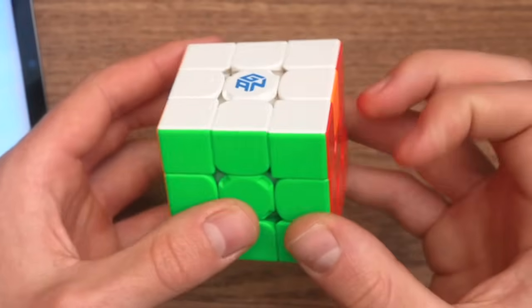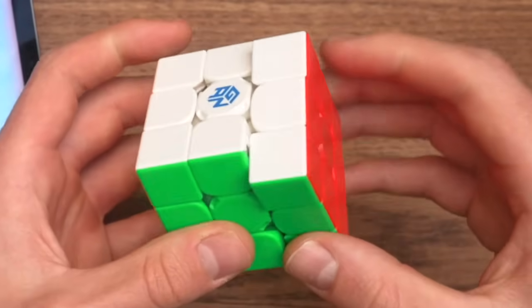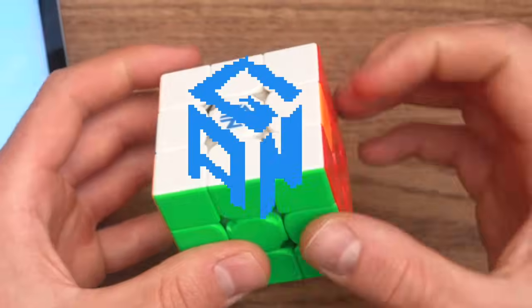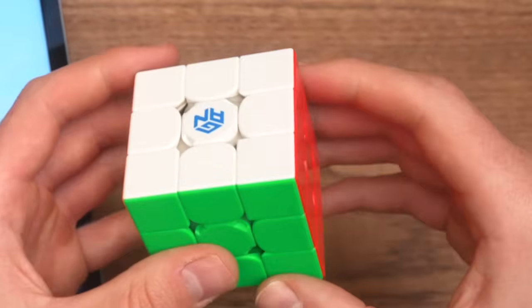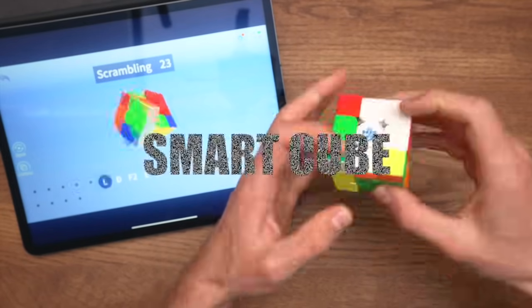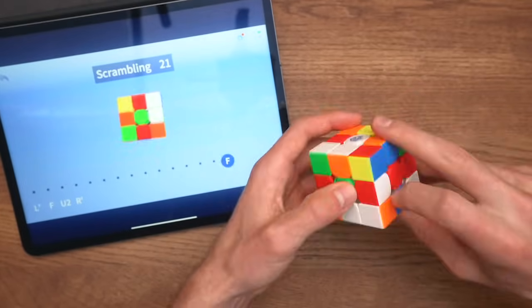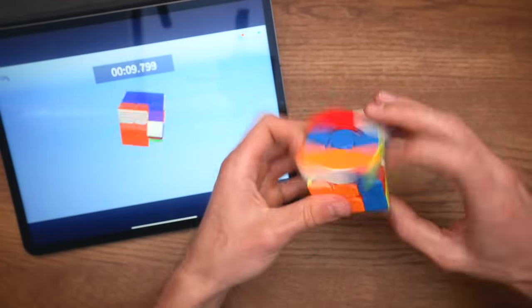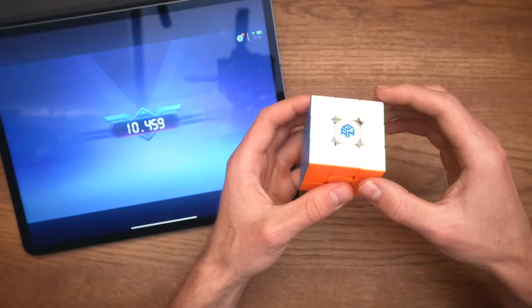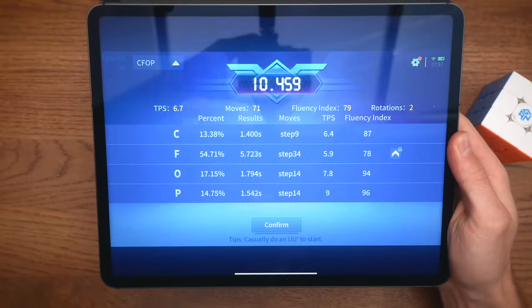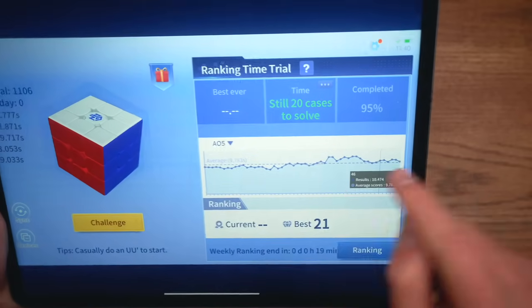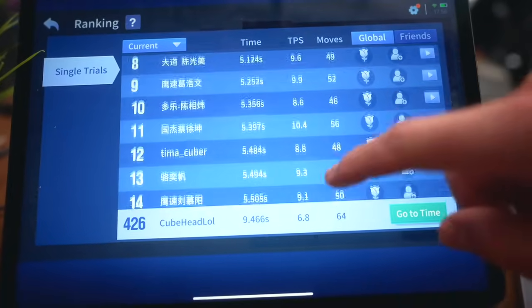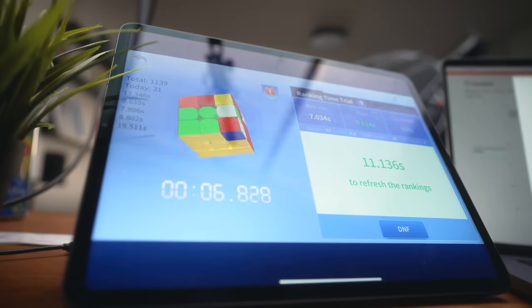Which brings us to the last point. Speed cubing is getting smart. Check this Rubik's Cube. Notice anything special? It's GAN, so probably expensive. But what about now? This is a smart cube. And what it does is track all the moves you do on the cube and send it to your phone. And this opens the door to so many insane features that I think will revolutionize cubing forever. I'm talking about analyzing solves, cubing together, learning how to cube, sharing your solutions, on and on and on. The possibilities are endless.